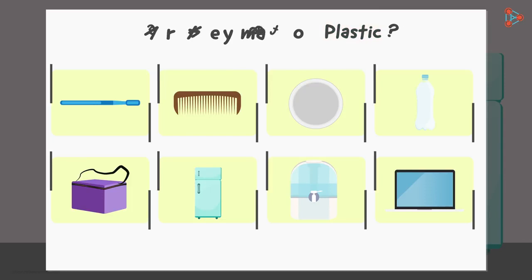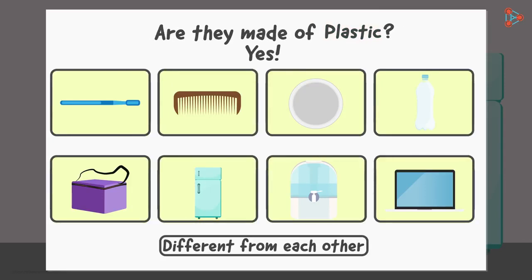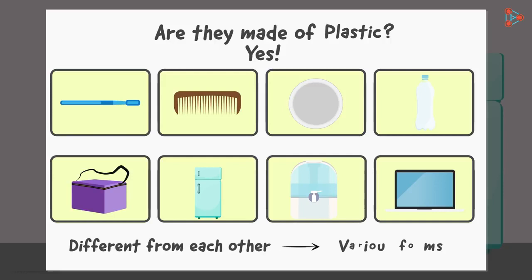So are all these articles made up of plastic? Yes, but they are quite different from each other. So how is that possible? Well, it is possible because plastic itself comes in various forms.